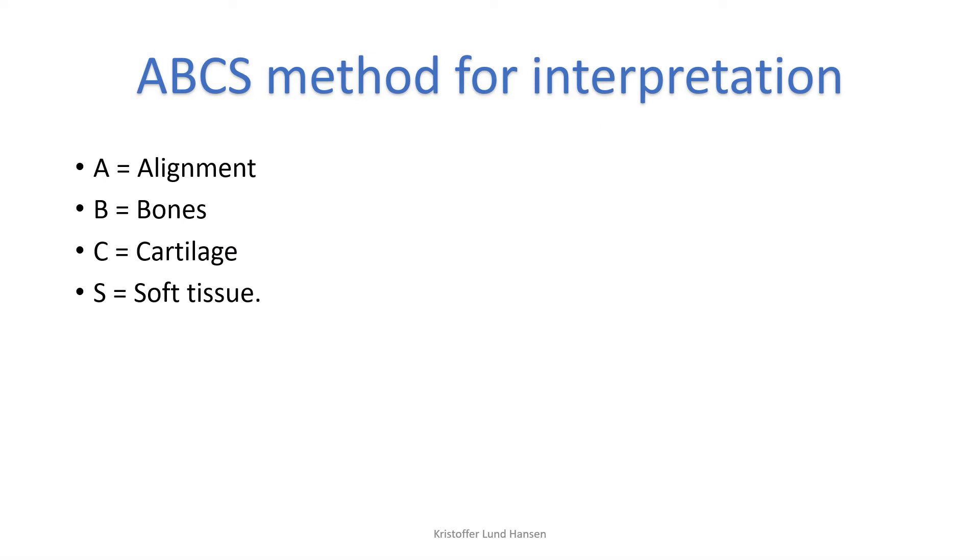When looking at bone x-rays, there are many ways that you can go forward. One mnemonic that you could use is the ABCS method. As with all other bone x-rays, it works well for the shoulder. A stands for alignment, B is for bones, C is for cartilage, and S is for soft tissue.